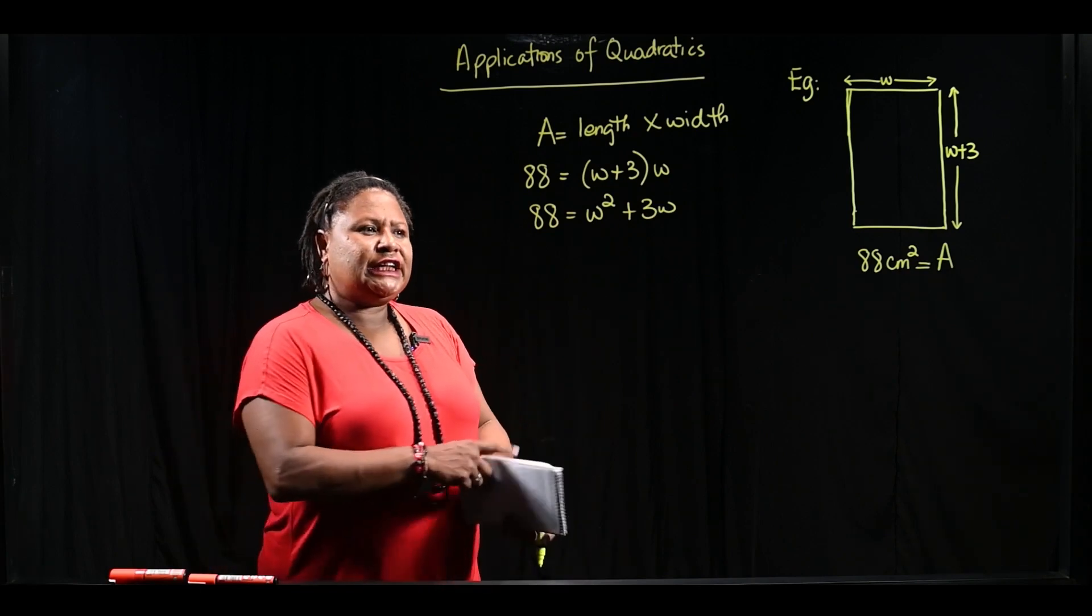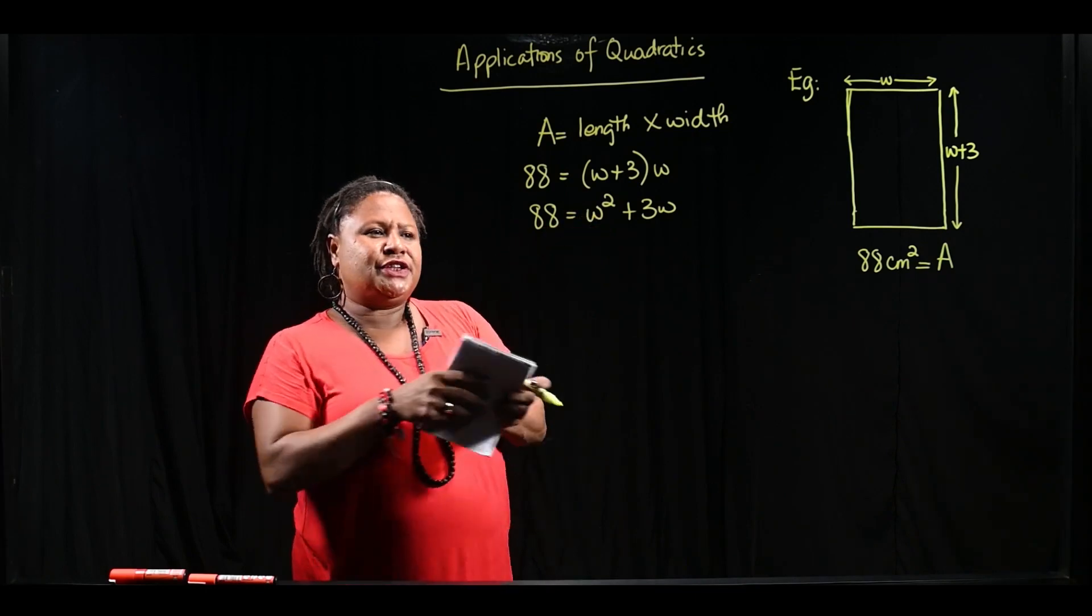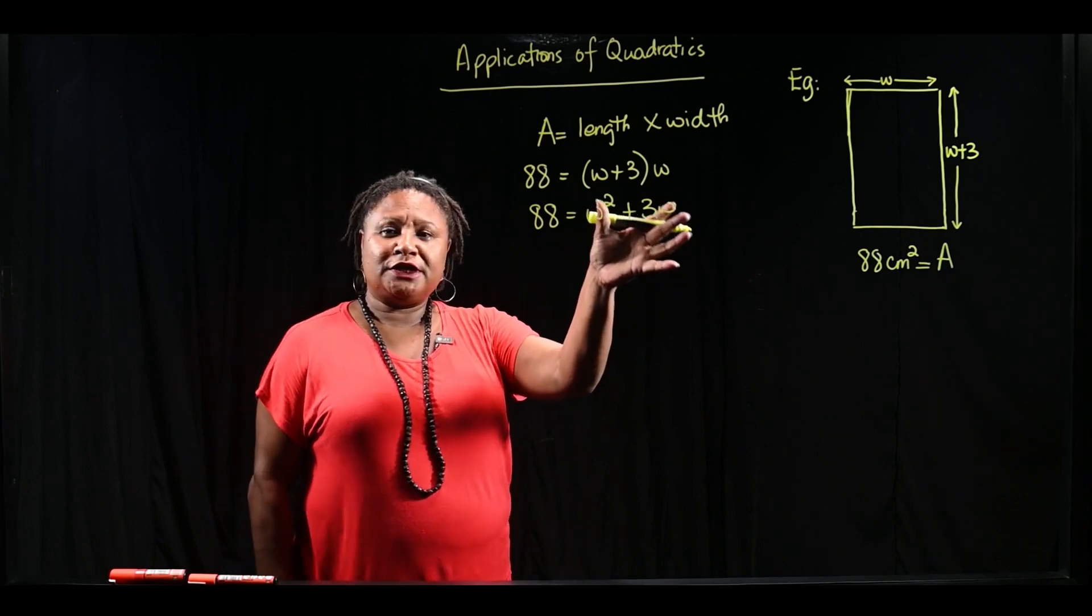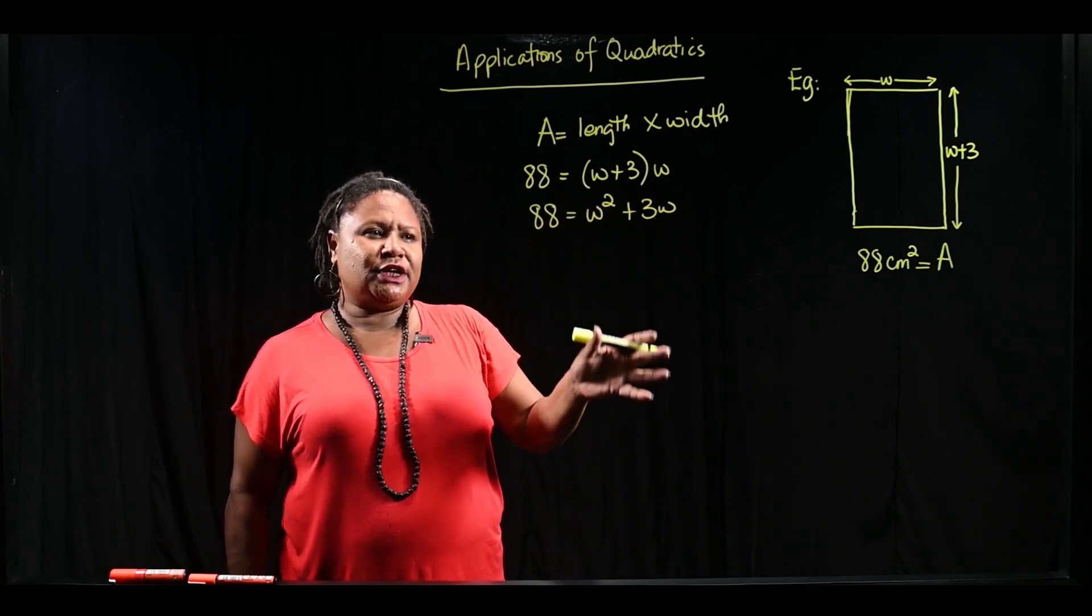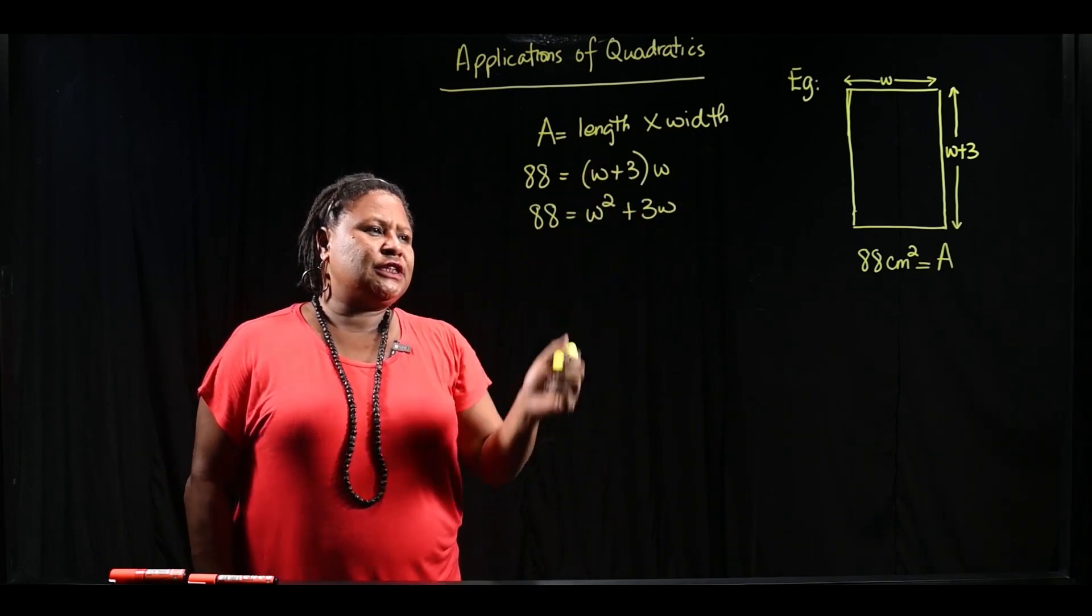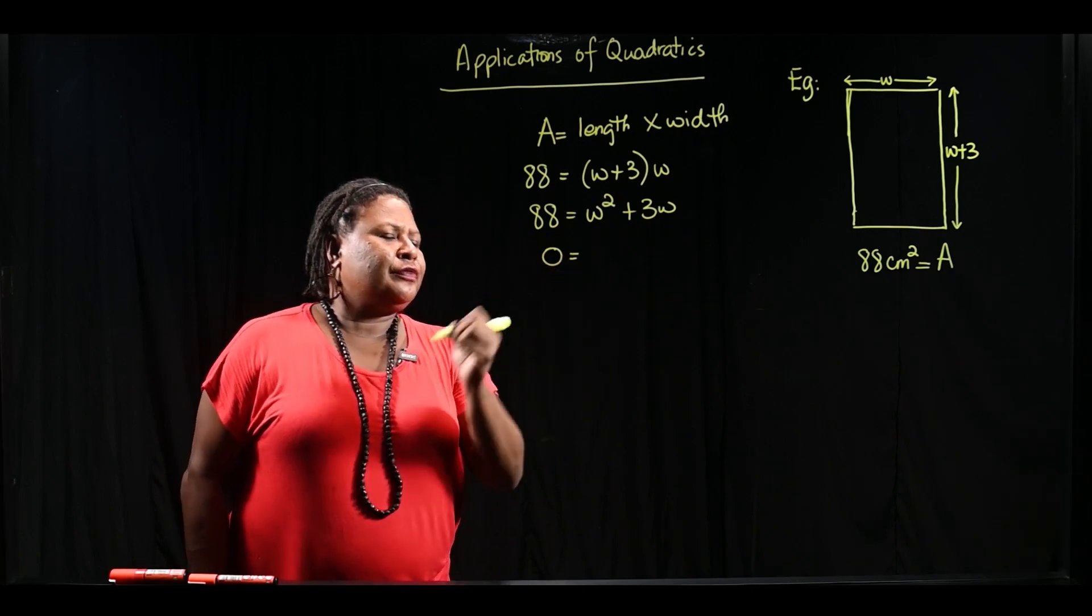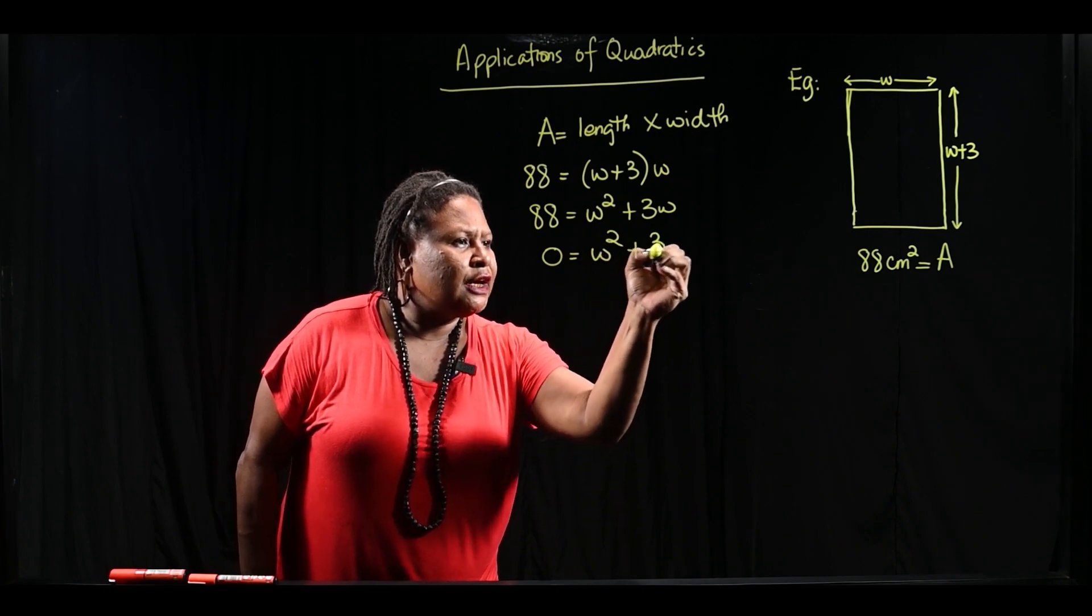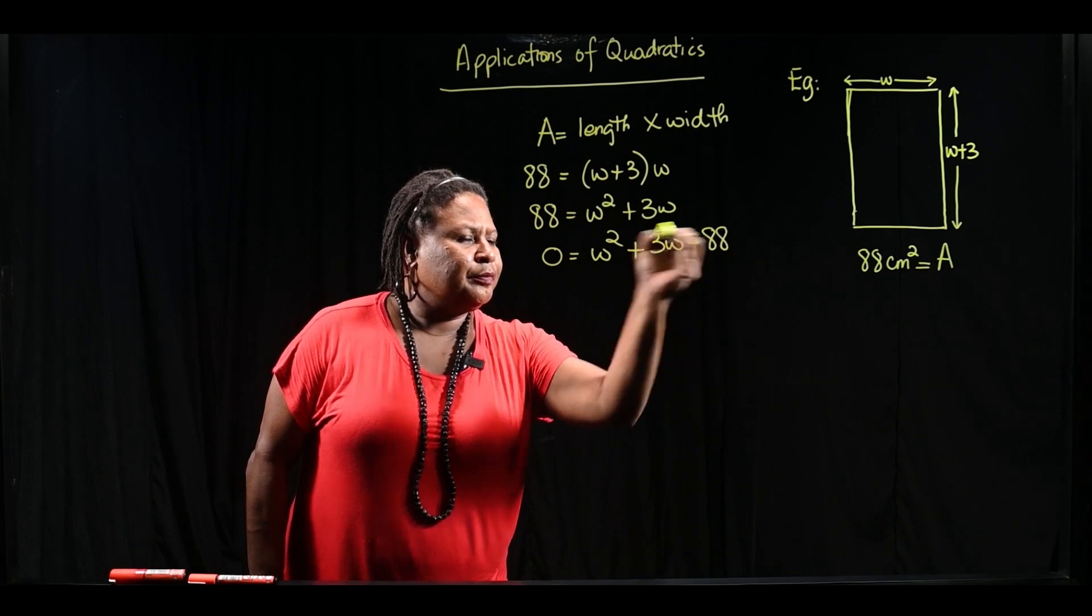Now, you can already tell that this equation is a quadratic equation because the highest power is 2. So if it's a quadratic equation, we are going to need to factorize it in order to solve it. Let's take 88 across to this side of the equation so that we have 0 on one side. And we have W squared plus 3W minus 88.